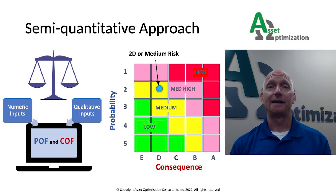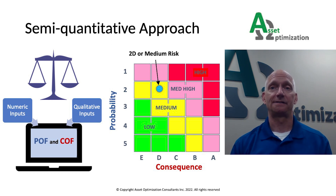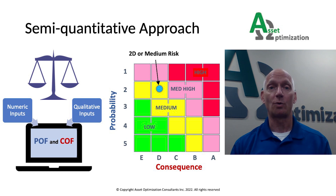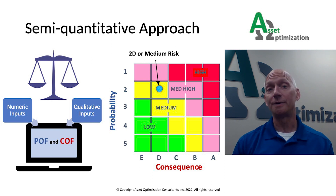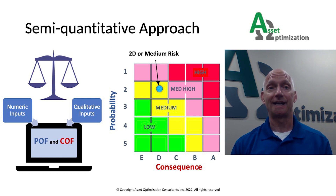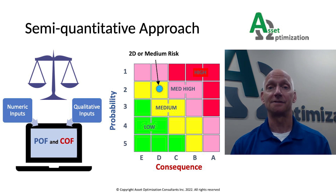A semi-quantitative risk analysis includes aspects of both qualitative and quantitative analysis. It is designed to obtain the benefits of both: less time is required for data collection and analysis than a more quantitative approach, and inputs are a mix of numeric and qualitative inputs. An example of numeric inputs would be corrosion rates, while qualitative inputs into this methodology might be things like coating or insulation condition. The results are usually given in consequence and probability categories, but numeric values may be associated with each category to permit the calculation of risk and the application of appropriate risk acceptance criteria.